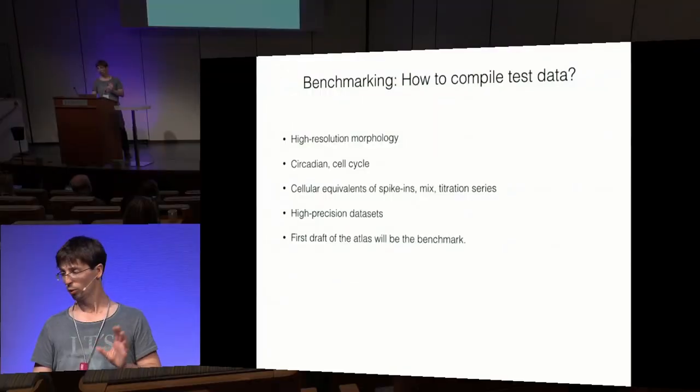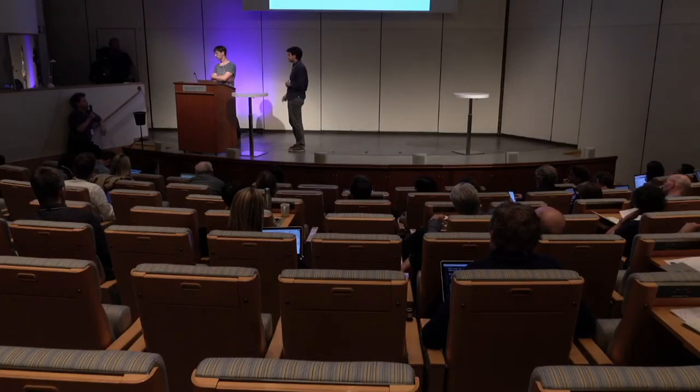In the Q&A, a question was raised: is there a fundamental distinction between how you should analyze data composed of cell types versus cell states? Specifically, should cell types use a clustering approach and cell states use trajectory approaches — or should all methods simply be applied to all data sets?